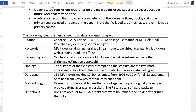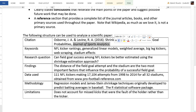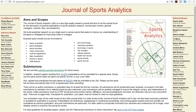Most papers should have a list of limitations. This one listed a couple — the most important being that their results did not account for kicks where it was somebody else's fault other than the kicker. For instance, if the person holding the ball drops or mishandles it, it affects the outcome of the kick, but the results don't distinguish whether it was the kicker's fault or the holder's fault. Your job is to select a paper from the Journal of Sports Analytics and complete all the information in this table.